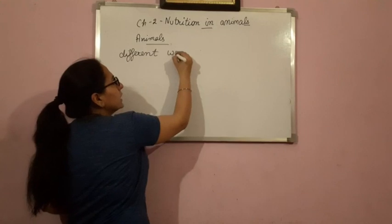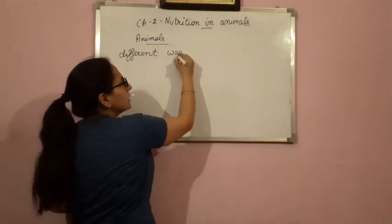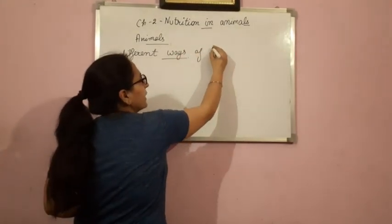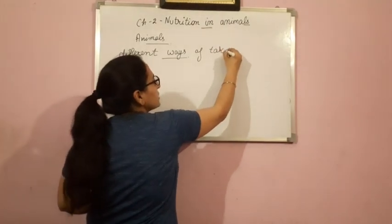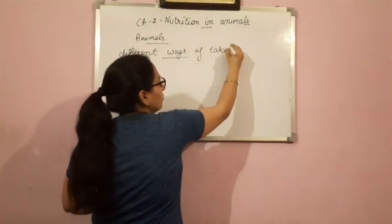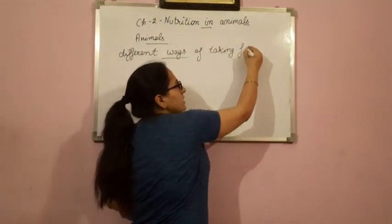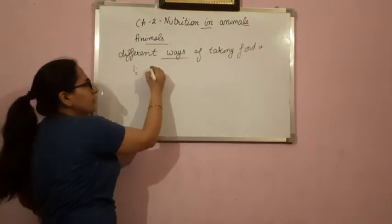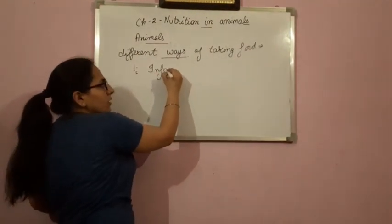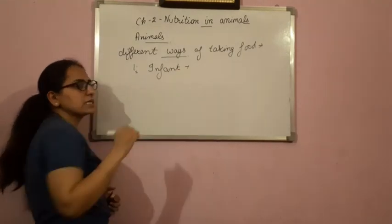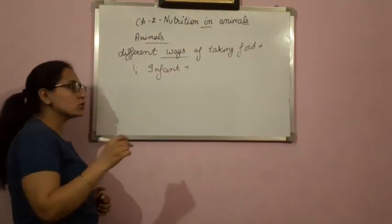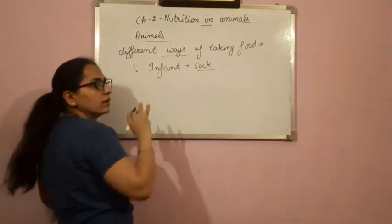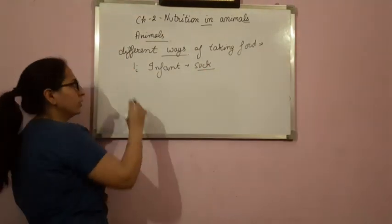If you look among animals, they take their food in different ways. Let me give you a few examples. First is the infant of human beings — infant means young babies. Infants of human beings used to suck the mother's milk, so that is their way of taking food.